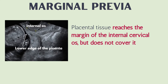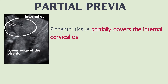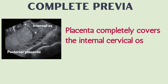The ultrasound image shows the placenta is at the margin of the internal os. Partial previa refers to placental tissue that partially covers the internal cervical os. Ultrasound image shows a small amount of placental tissue covering the internal os. Complete previa shows the placenta completely covering the internal cervical os.